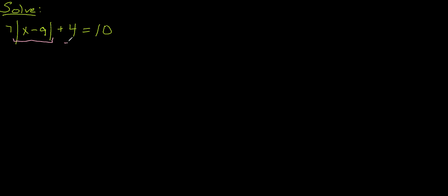So to move that over I'm going to subtract 4 from both sides. And what that leaves me with is 7|x - 9| = 6.